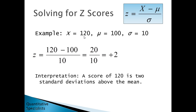In this example, x is 120, mu is 100, and standard deviation is 10. Computing: 120 minus 100 over 10 is 20 over 10, giving a z of positive 2. This means the score of 120 is two standard deviations above the mean.